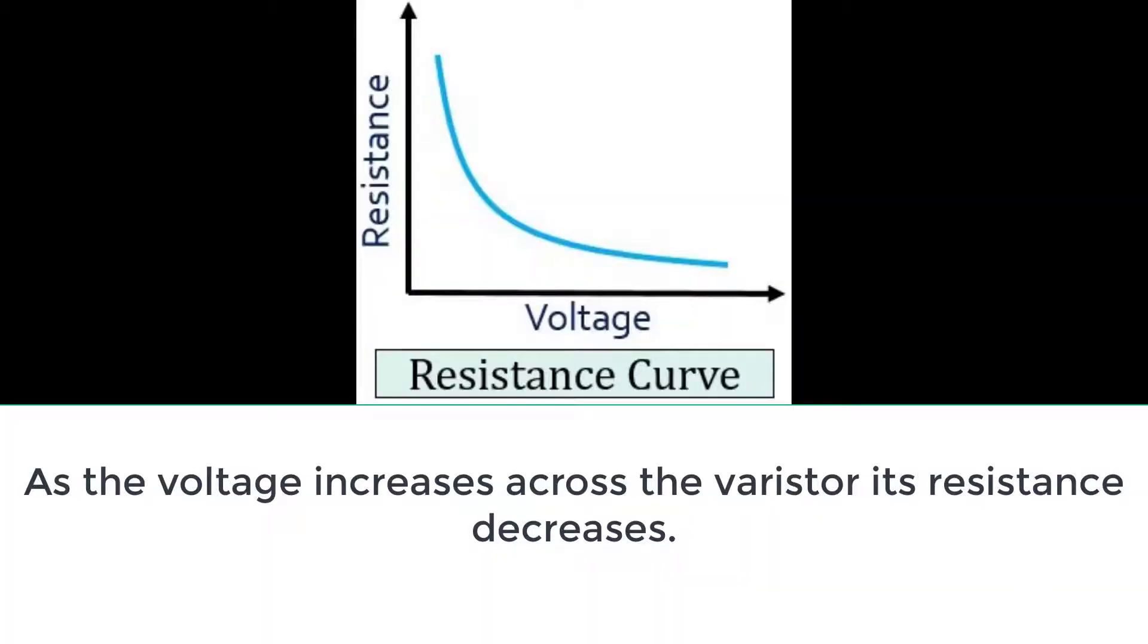From this image, we will see how the resistance of MOV varies with the applied voltage across it. We can see the inverse relationship between the applied voltage and the resistance, which means to say that as the applied voltage increases, the internal resistance of MOV decreases.